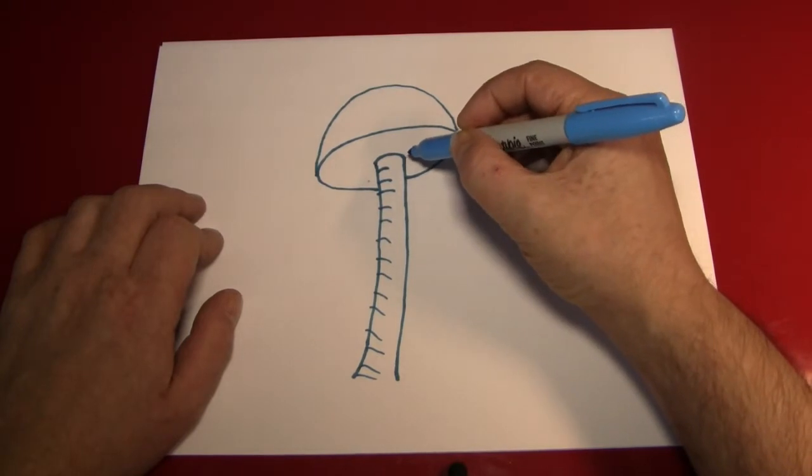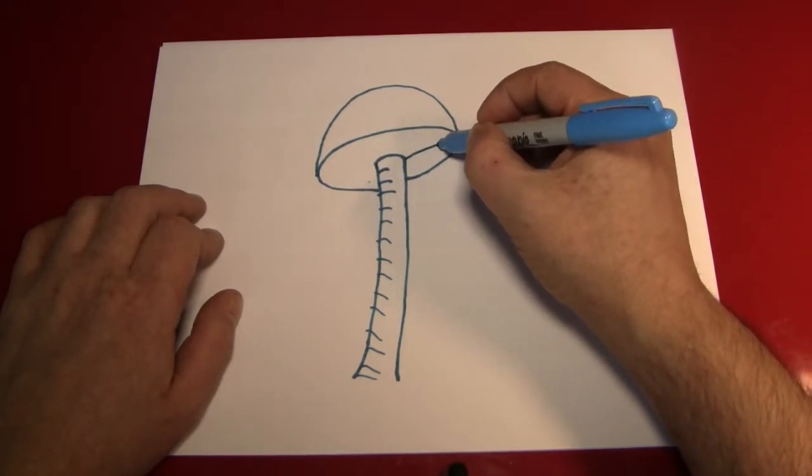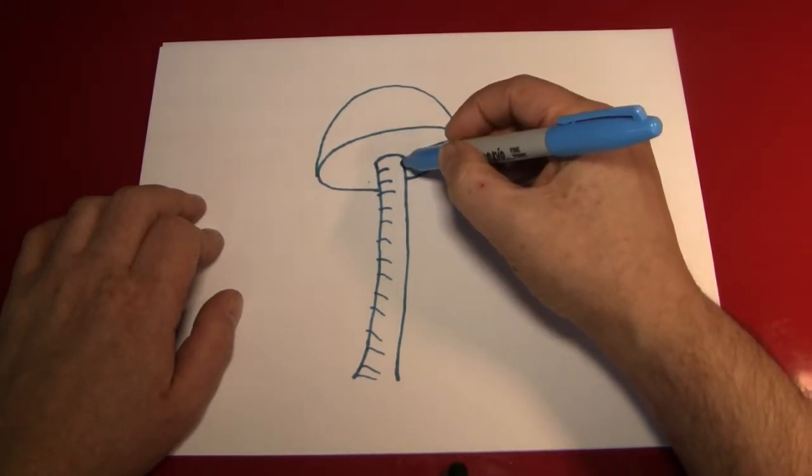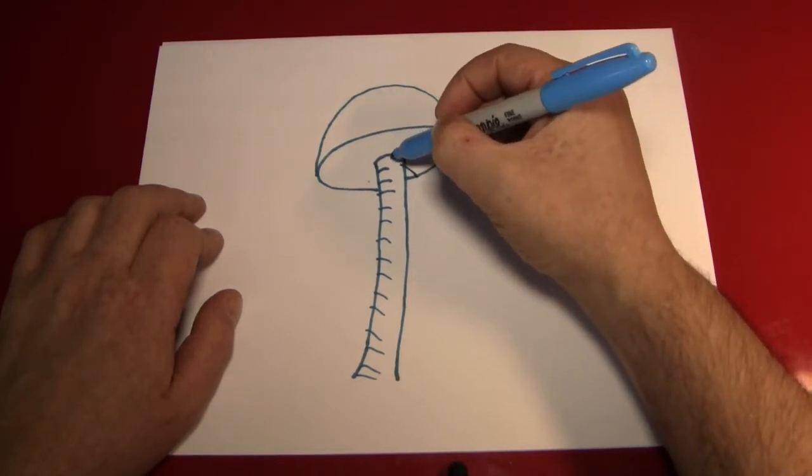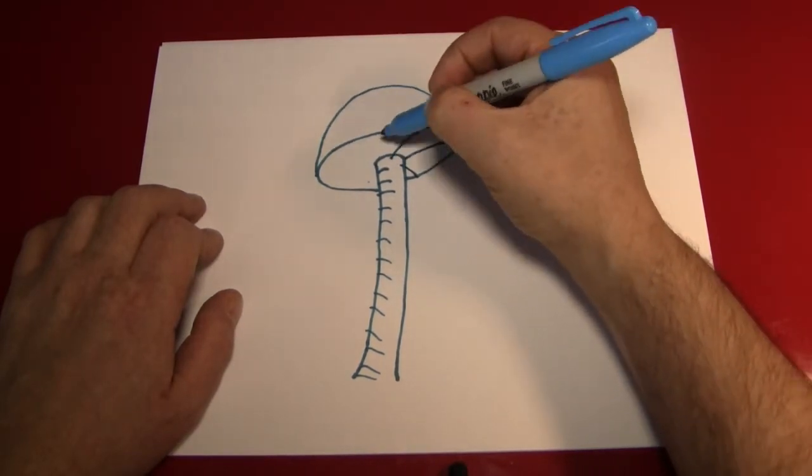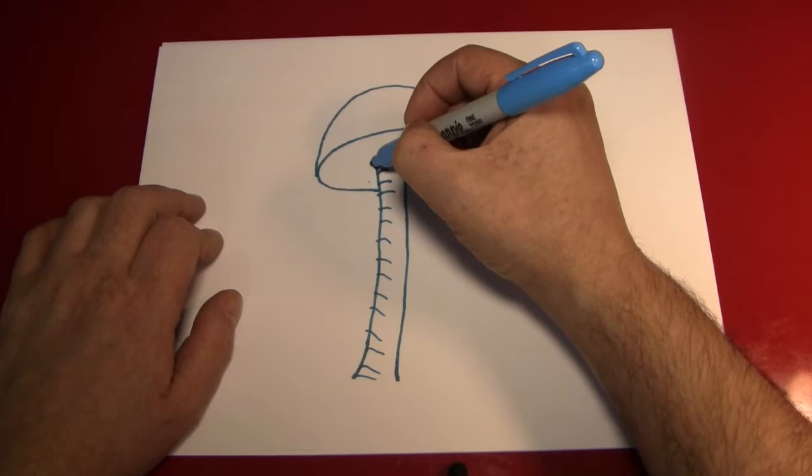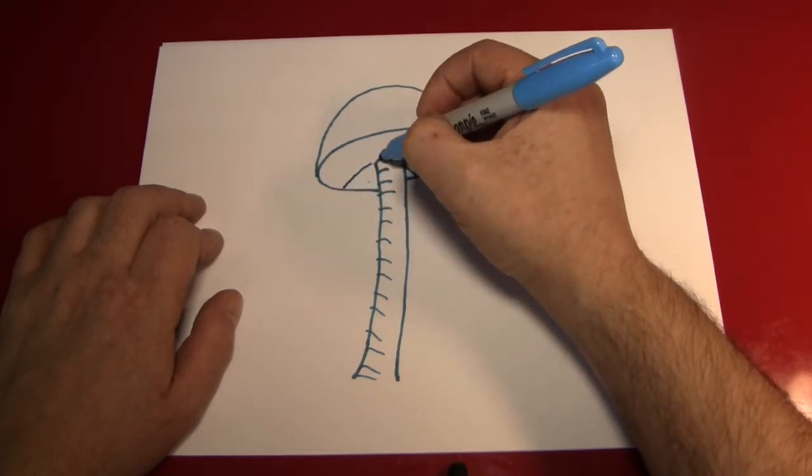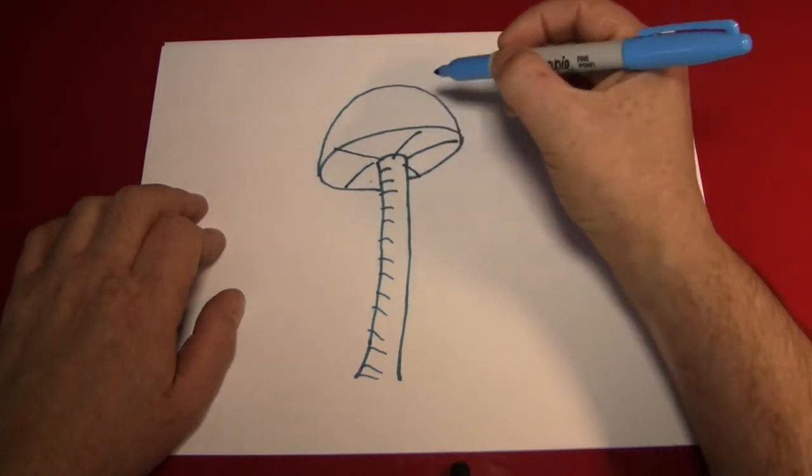After that we're going to detail the bottom of the mushroom cap with these nifty little lines and they should be slightly curved and reasonably even with each other.